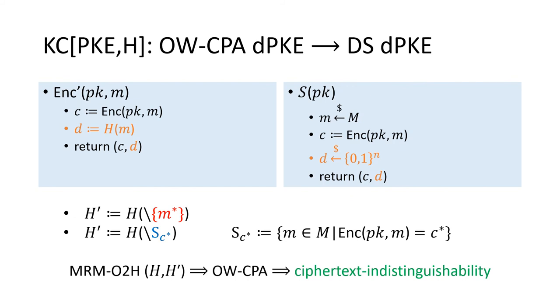To prove the IND security, we may want to define a function h' to be h, except for the point M*, so that we can invoke the measure-rewind-measure one-way-to-hiding to construct a one-way attacker against the underlying PKE.